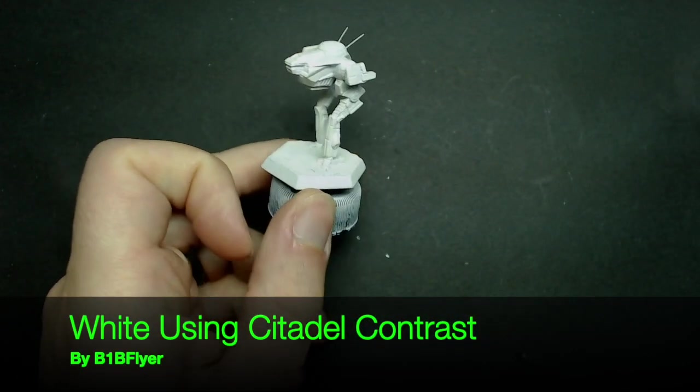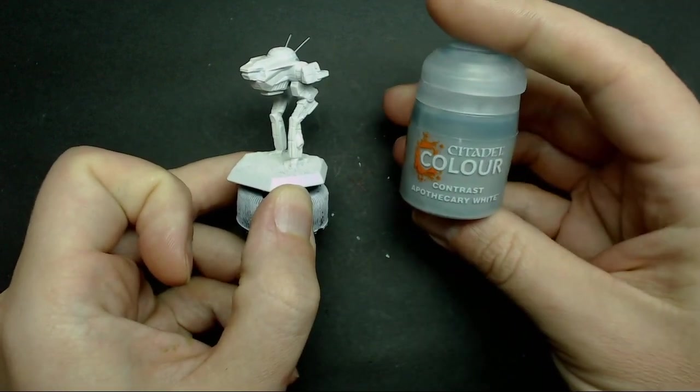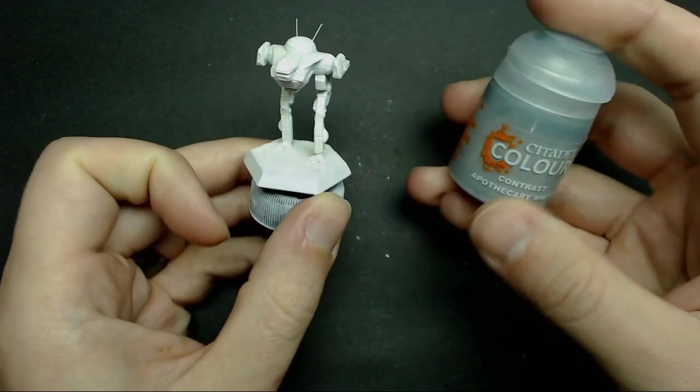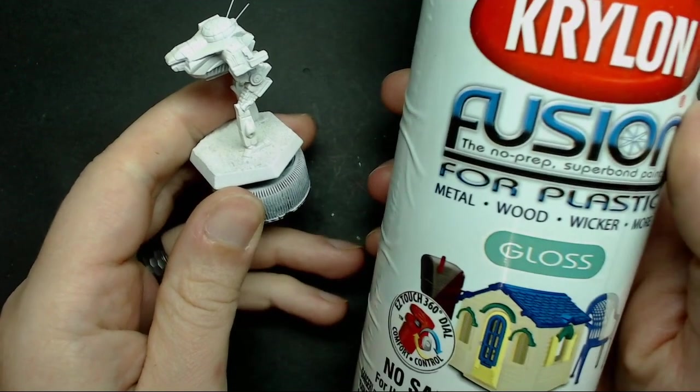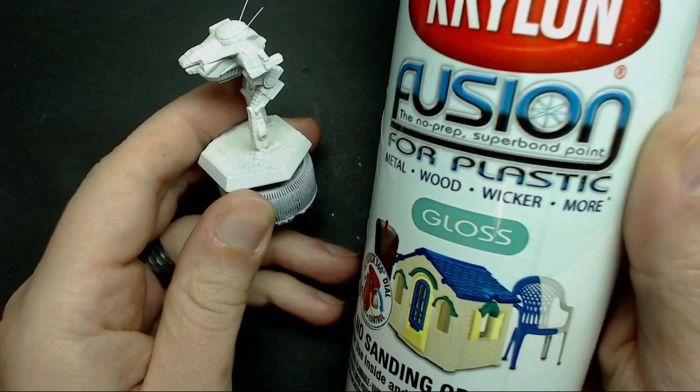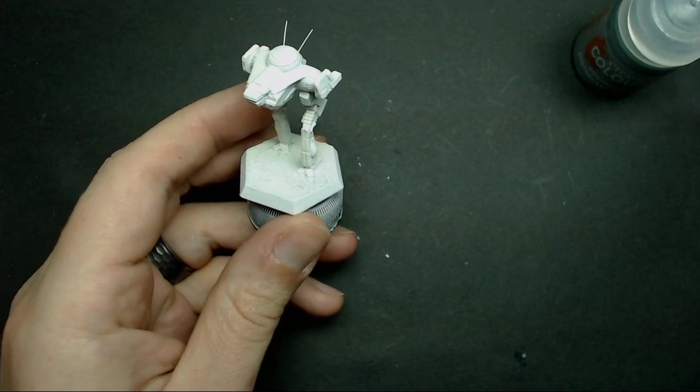Hey everyone, B1B Flyer here. I'm going to show you how to paint white using Citadel Contrast paints. Got their Apothecary White bottle here. Make sure you shake that up real well. I've also primed my miniature using Krylon Fusion for plastic, but anything that you can get a nice glossy finish should work, including GW's own line of primers.